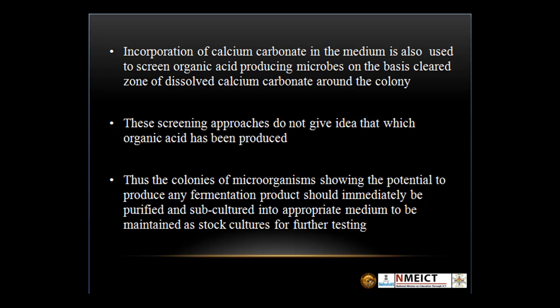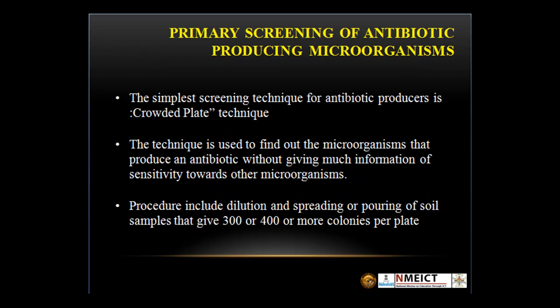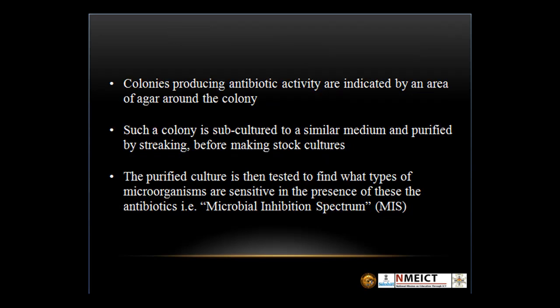Primary screening of antibiotic producing microorganisms: the simplest screening technique is the crowded plate technique. It is used to find out microorganisms that produce an antibiotic without giving much information on sensitivity towards the microorganisms. Procedures include dilution and spreading or pouring of soil samples to give well isolated colonies. Colonies producing antibiotics are indicated by a zone of inhibition around the colony. Such colonies are subcultured using a similar medium and purified by streaking before making stock cultures. The purified culture is then tested to find what type of microorganisms are sensitive in the presence of these antibiotics — that is, the microbial inhibition spectrum is determined.